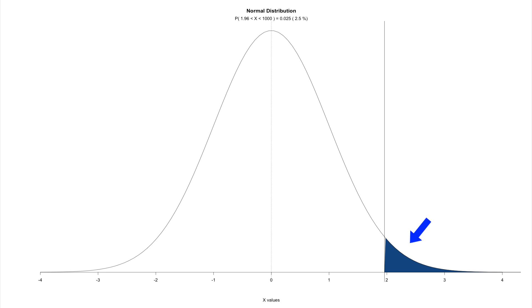And so in this tail, you would get 0.025. If you did the same thing on the left side of the curve, you would get another 2.5%, and that would give you a grand total of 5%.